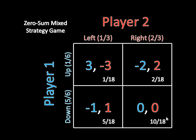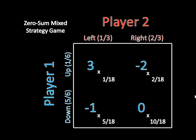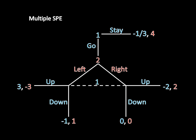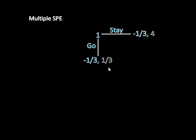We take these probabilities and multiply them by Player 1's payoffs for each outcome. So: 3 × (1/18) + (-2) × (5/18) + (-1) × (2/18) + 0 × (10/18), which gives us 3/18 - 10/18 - 2/18 + 0 = -9/18... wait, that sums to -6/18, or -1/3. So Player 1's expected payoff from going is -1/3. Player 2's payoff is 1/3, but since she doesn't have a move at the top, it's inconsequential for the backward induction.